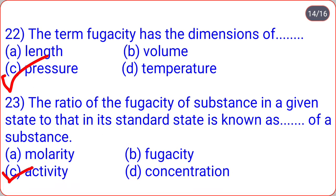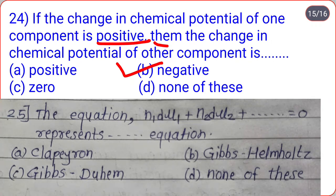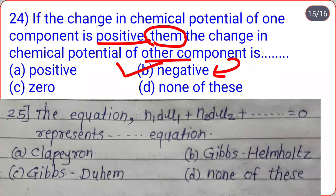The ratio of the fugacity of a substance in a given state to that in its standard state is known as the activity of a substance. If the change in chemical potential of one component is positive, then the change in chemical potential of the other component is negative — correct option is B.